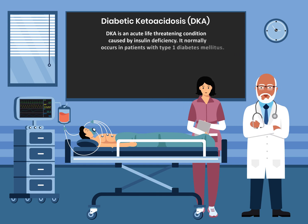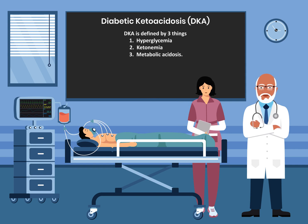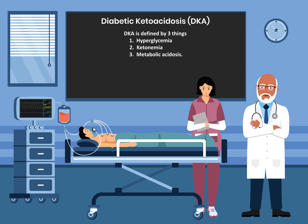DKA is an acute life-threatening condition caused by insulin deficiency. It normally occurs in patients with type 1 diabetes mellitus. DKA is defined by three things: number one, hyperglycemia; number two, ketonemia; and number three, metabolic acidosis.